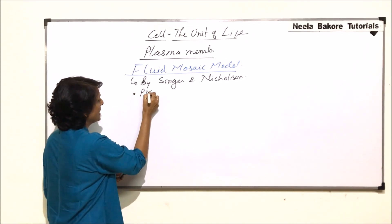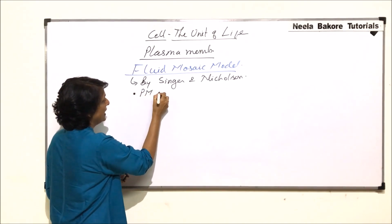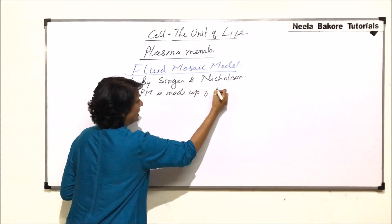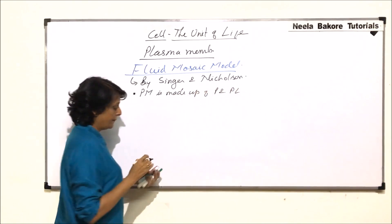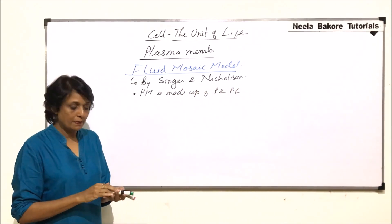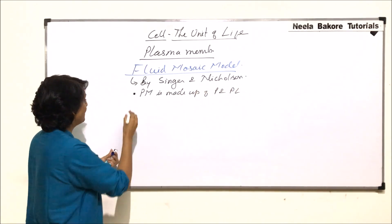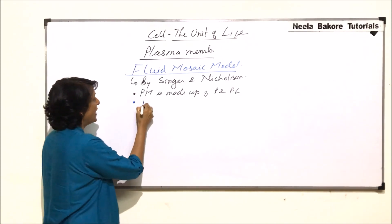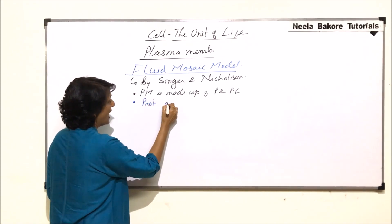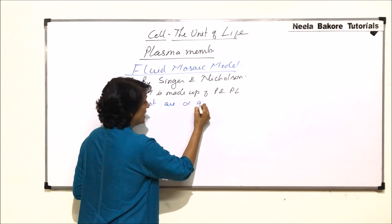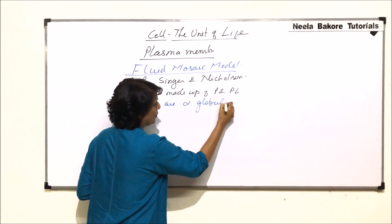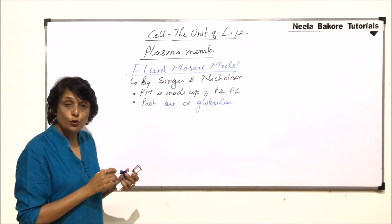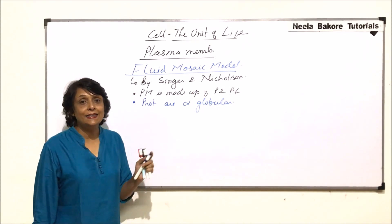They said that the plasma membrane is made up of proteins and phospholipids — the same as what was given by Daniele and Davson. The next point was that the proteins are alpha globular proteins, which is also exactly the same as what was stated by Daniele and Davson.